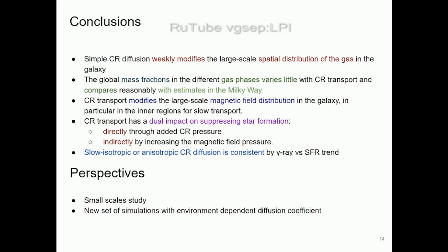To conclude: different diffusion scenarios modify very weakly the gas fractions of different ISM phases and the main gas distribution in the galaxy. However, different models have a dual effect on star formation, particularly by modifying the magnetic distribution — either at large scales affecting the dynamo or at smaller scales. Finally, gamma-ray luminosity observations of local galaxies suggest that fast isotropic diffusion is not very consistent with observations.